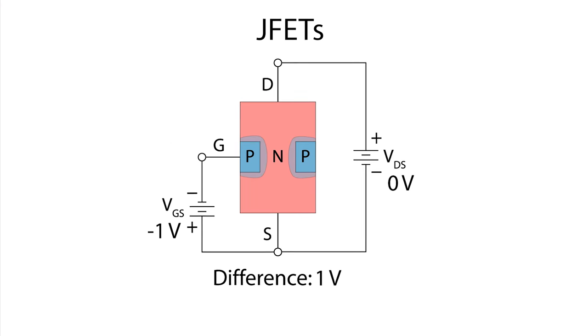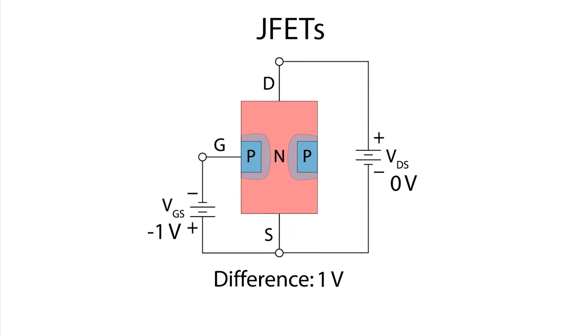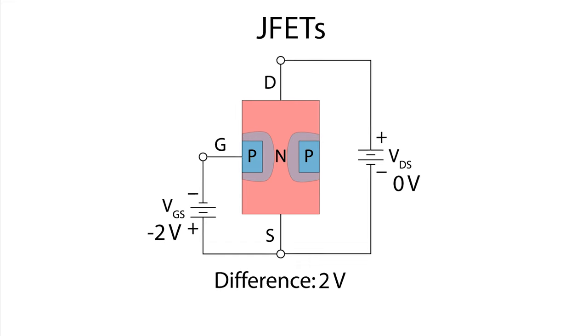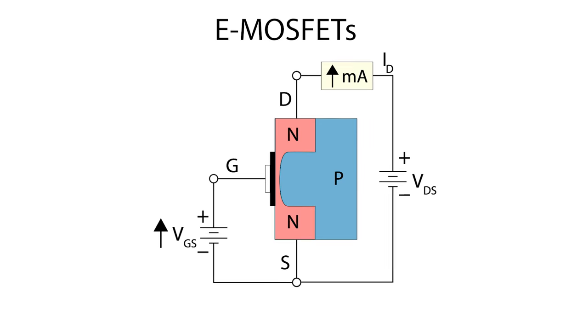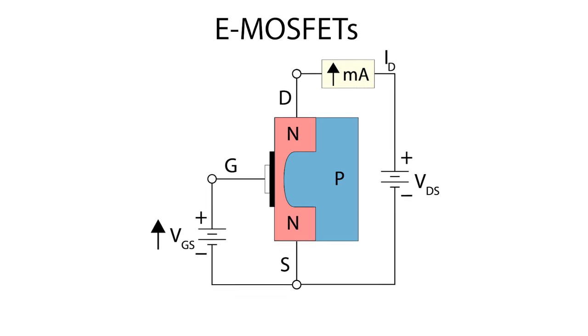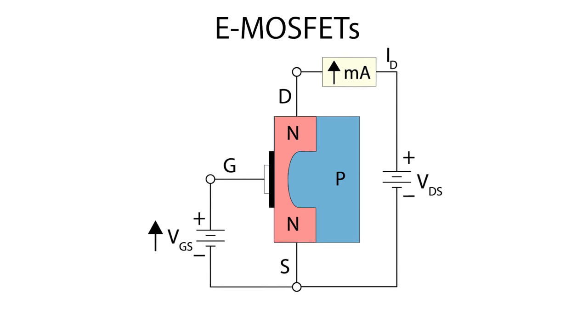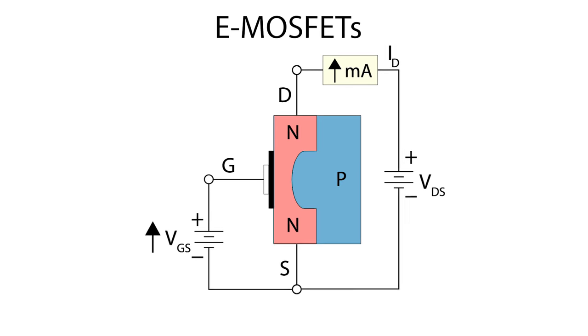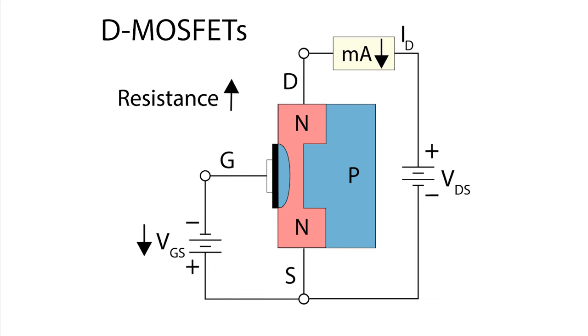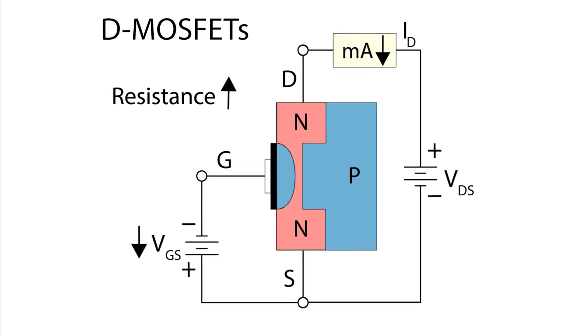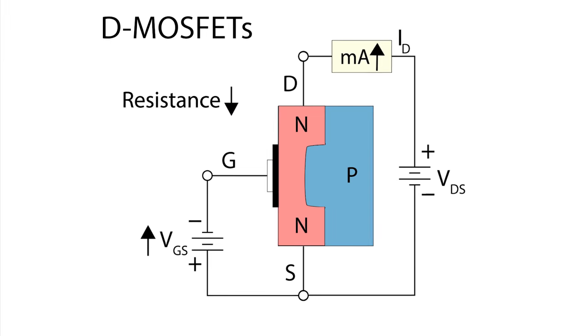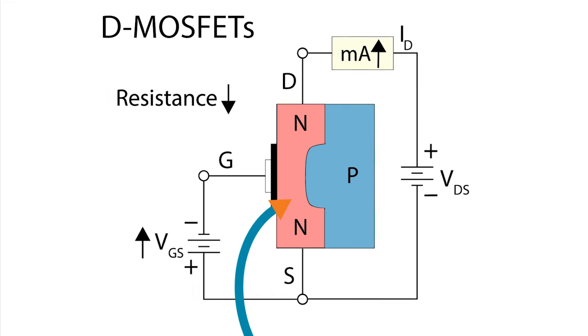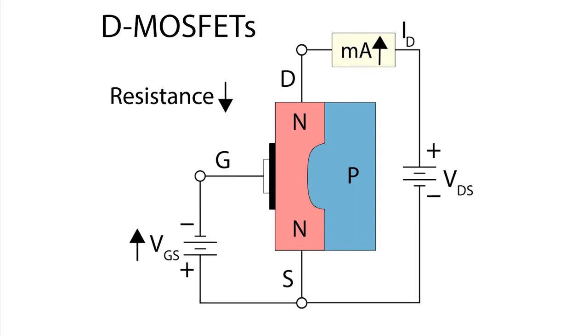To summarize, we have JFETs that only work in depletion mode. They are always on unless acted upon by a voltage at the gate, which can decrease the flow of current through its channel. E-MOSFETs only work in enhancement mode. They are by default off, requiring a voltage at the gate to create a channel between the source and drain. And D-MOSFETs, that can work in depletion or enhancement mode. Like JFETs, they are also on by default. But a voltage at the gate can cause it to decrease or increase the current flowing through its channel.